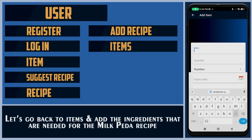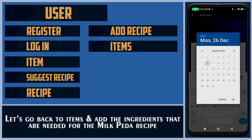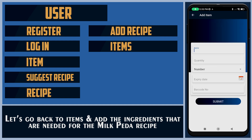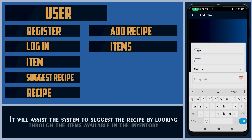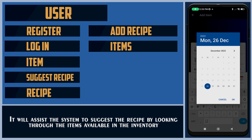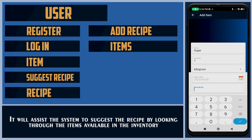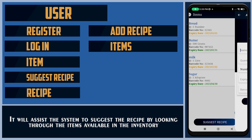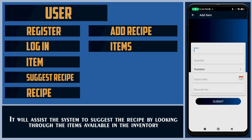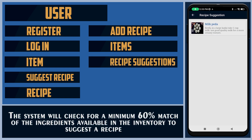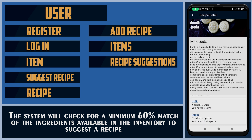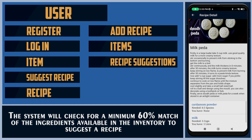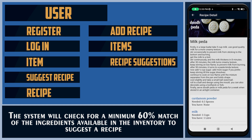Let's go back to the items and add the ingredients needed for the Milk Peda recipe. This will assist the system in suggesting the recipe by looking through items available in the inventory. The system will check for a minimum 60% match of the ingredients available in the inventory to suggest a recipe.